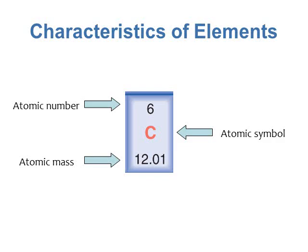Those are the three main things you need to know for the periodic table. Atomic number is the number of protons. Atomic symbol is a one or two letter representation for that element. And atomic mass is the number of protons plus the number of neutrons.